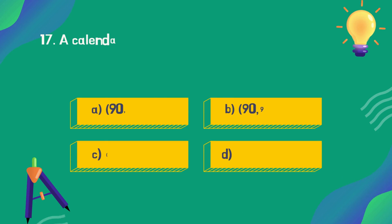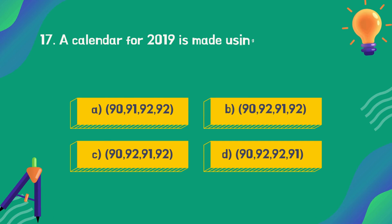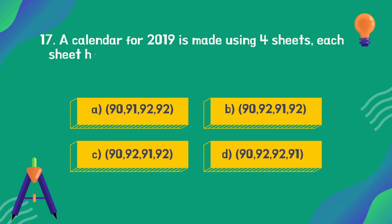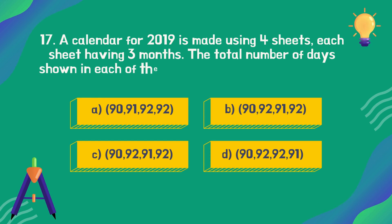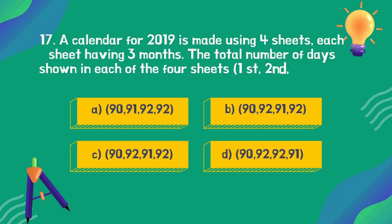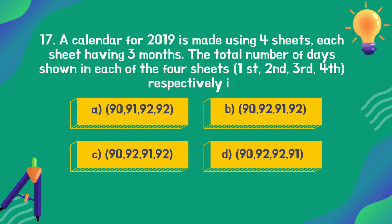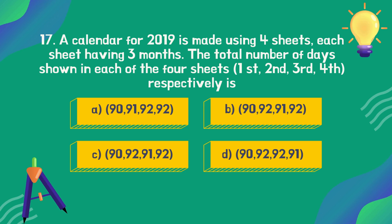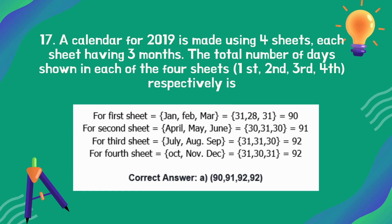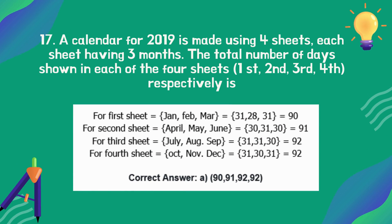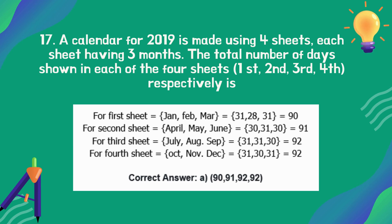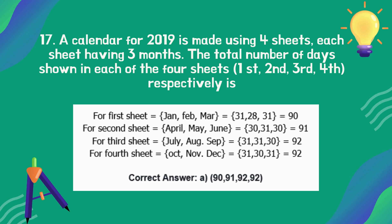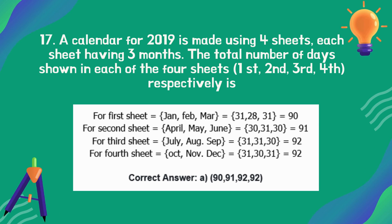A calendar for 2019 is made using four sheets, each sheet having three months. The total number of days shown in each of the four sheets — first, second, third, fourth respectively — is which of the following? The correct answer is option A: 90, 91, 92, 92.